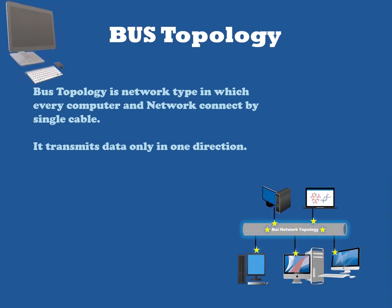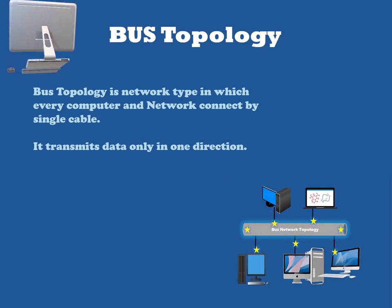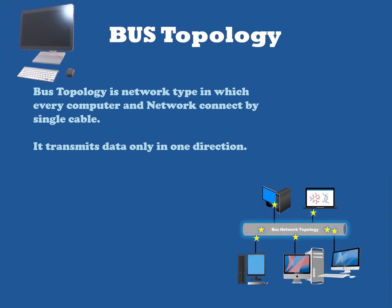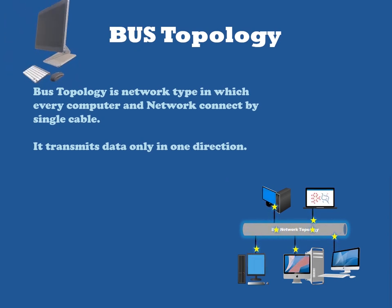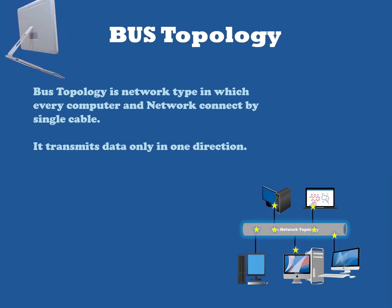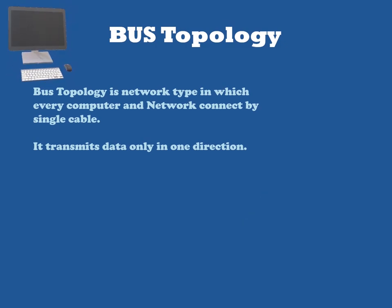Bus topologies use a single cable to transmit data, making them somewhat vulnerable. If the cable experiences a failure, the whole network goes down.